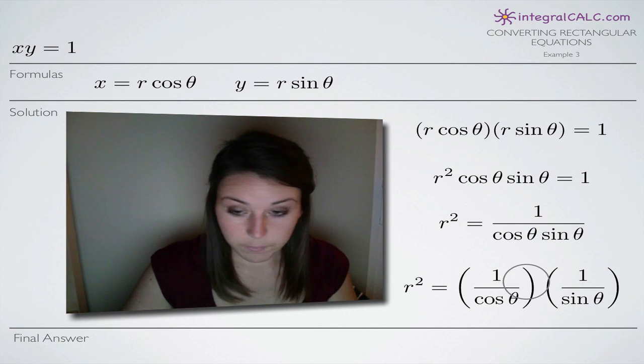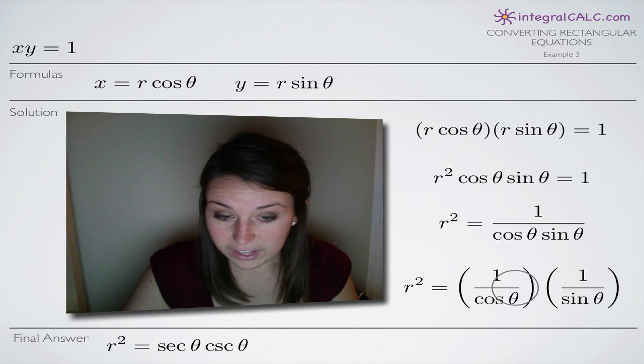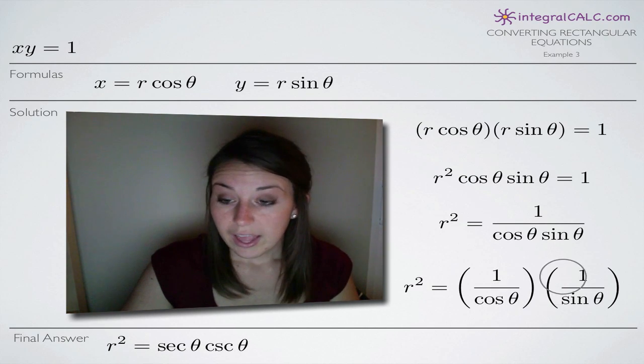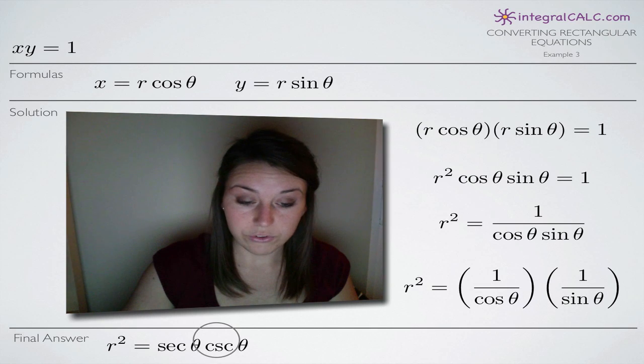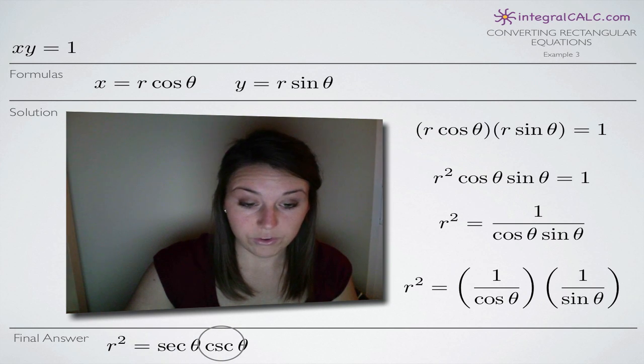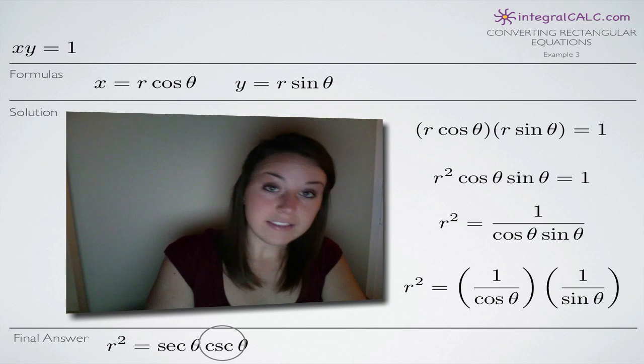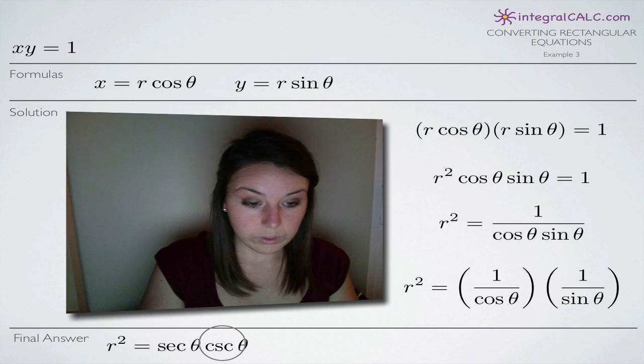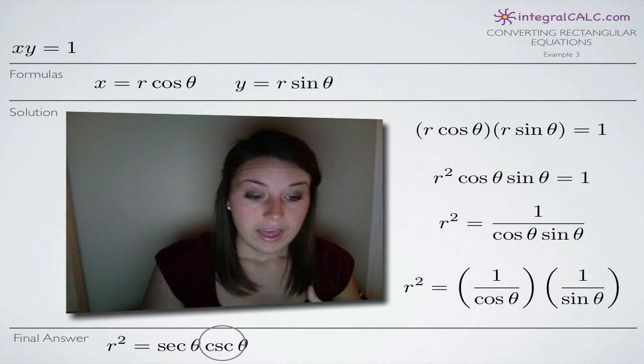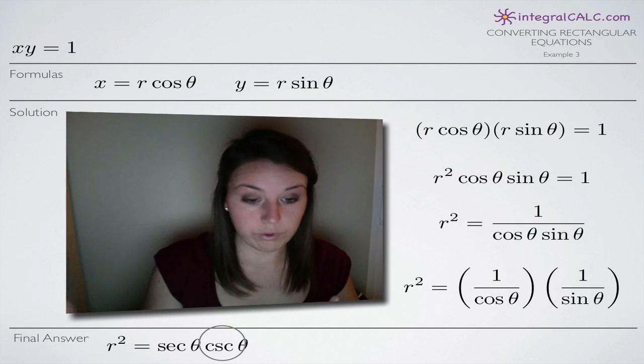The reason that we do that is because 1 over cosine of theta is equal to secant of theta and 1 over sine of theta is equal to cosecant of theta. So our final answer is r squared equals secant of theta times cosecant of theta. In this case, it's simpler to leave r squared on the left-hand side than to take the square root of r and take the square root of the right side.